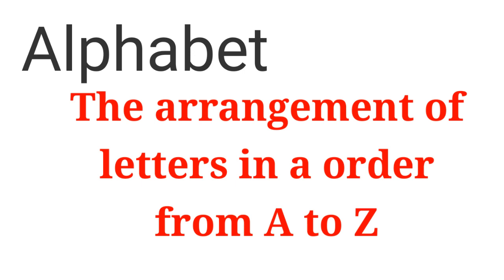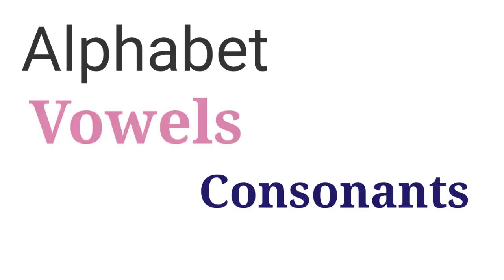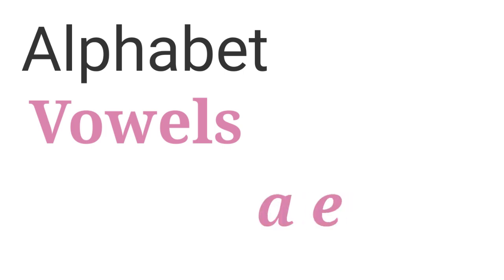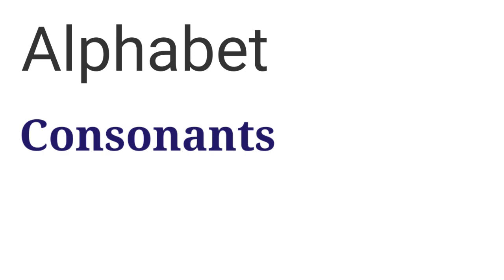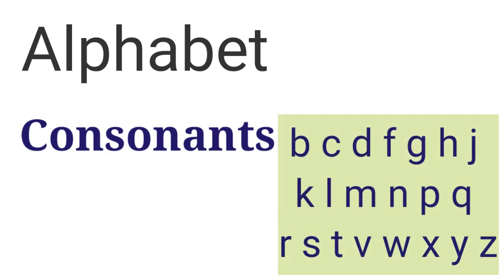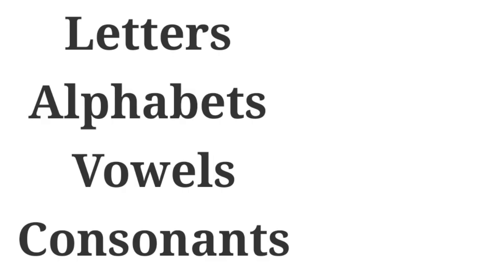Now alphabets hote hain two types ke: vowels and consonants. Jaise Hindi mein hote hain swar aur vyanjan. Vowels are A, E, I, O, U and the consonants are B, C, D, F, G, H and so on up to Z. A, E, I, O, U ko chhodke.